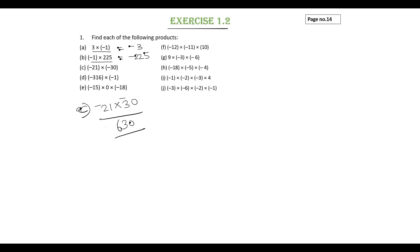So it will be plus 630. Next, D subdivision, minus 316 into minus 1. Using the property, you can write it as plus 316.